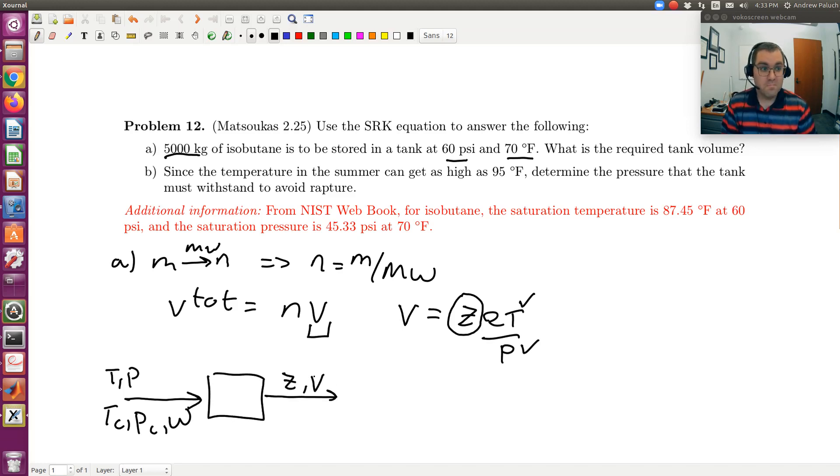All right, so now subtleties in A. First would be, we're given some saturation information. So first, what phase do I have? Phase is important so that if you get more than one real root, so if you're close to coexistence, determining which root to choose. So which value of Z or V to use. We're told that saturation temperature at 60 psi, T sat is 87.45 degrees Fahrenheit.